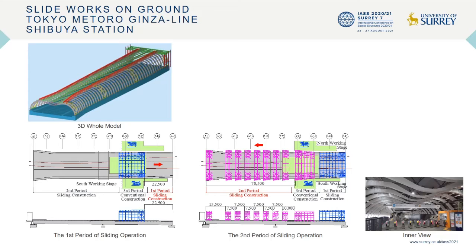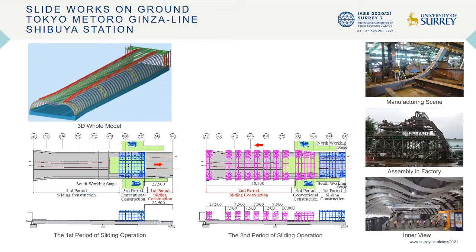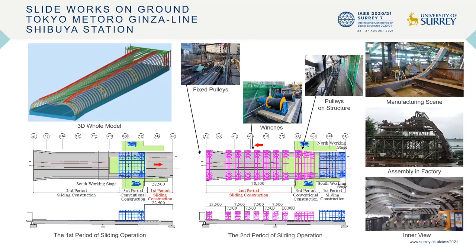The second project is Tokyo Metro Ginza Line, Shibuya Station. This is the roof structure of the station building, and it has a number of restrictions at the construction site. For example, the construction hours are limited, and strict safety regulations exist. For these reasons, the efficiency and safety of the sliding construction method are beneficial.